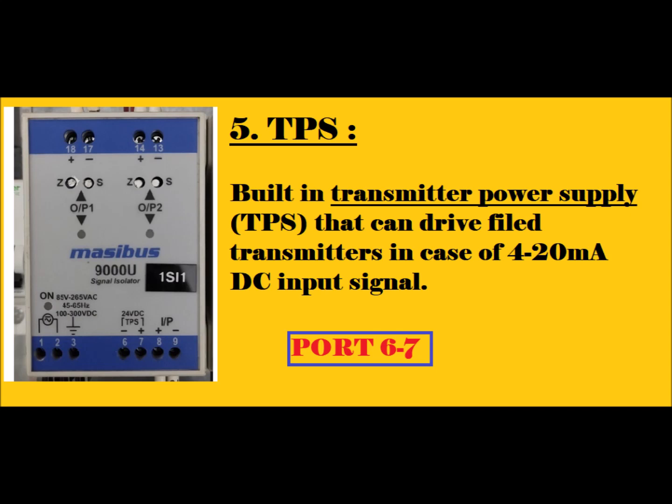The next point is TPS — Transmitter Power Supply. Just imagine that equipment is installed in the field and it requires 24V DC. With the help of the Signal Isolator, this supply is provided through ports 6 and 7 — positive and negative — because it is a DC power supply.